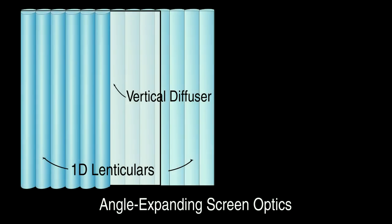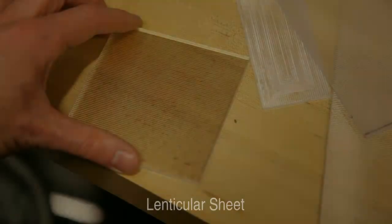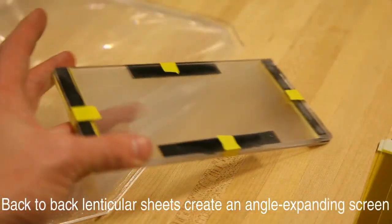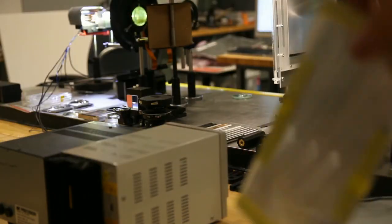In practice, it is possible to construct a horizontal-only angle-expanding screen using lenticular sheets. In this clip, we demonstrate such a screen, which we fabricated from back-to-back lenticular sheets of different focal lengths. From the viewer side of the screen, angular information is magnified. From the projector side, the image appears horizontally minified.